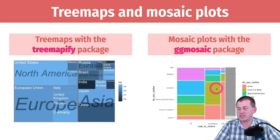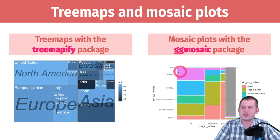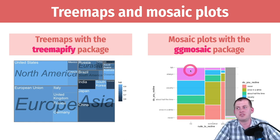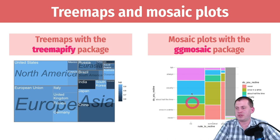They themselves will once in a while recline. These are again hard to read because you have to look at, for example, this cell representing the people who think it's rude to recline but always recline — which is an interesting finding.